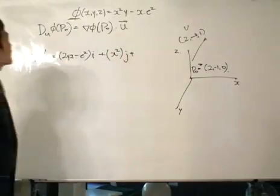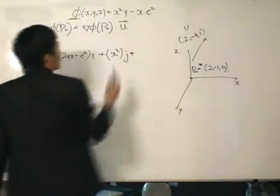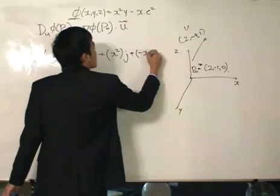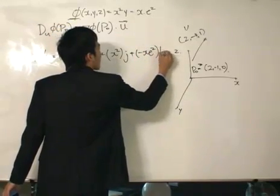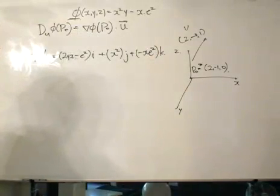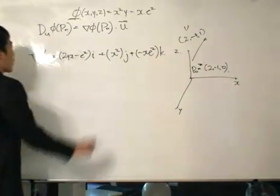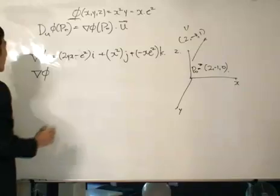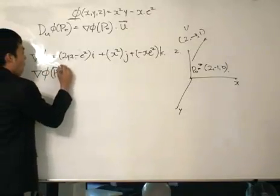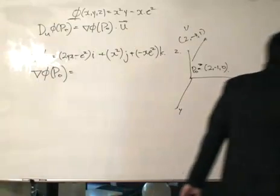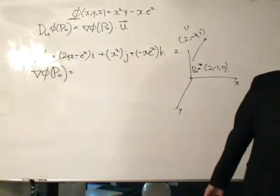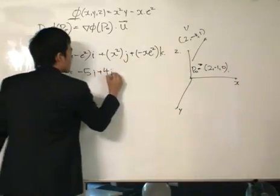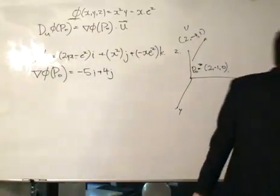Partial differentiating with respect to z, which is this one over here, and we get minus x e to the power of z, and that forms the k component. All is nice and well. So now we want to evaluate this at the point p-naught. We evaluate del phi at p-naught. P-naught is 2 minus 1, 0, and that will simply give us minus 5i plus 4j, and let me just check minus 2k.